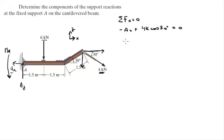And it is equal to 0. So when you solve for Ax, you know that Ax is equal to 4K times the cosine of 30, which comes out to be 3.464 kN.